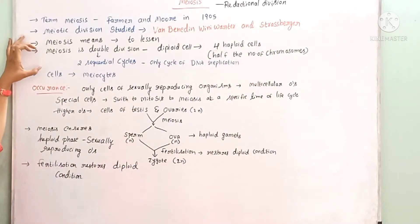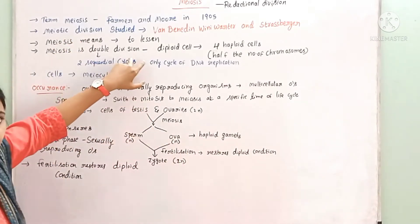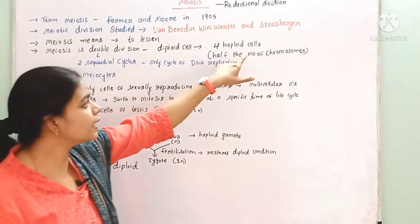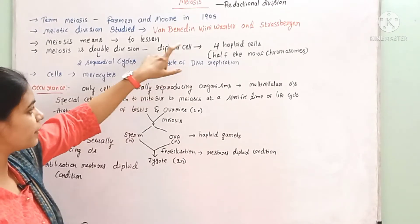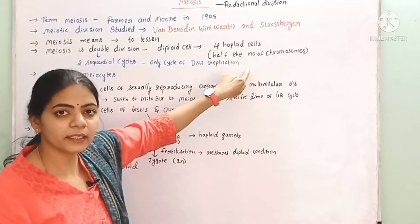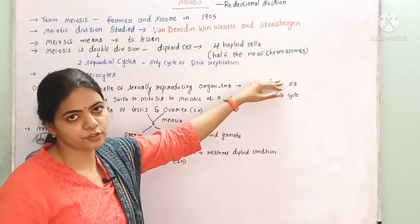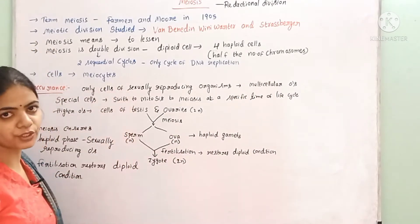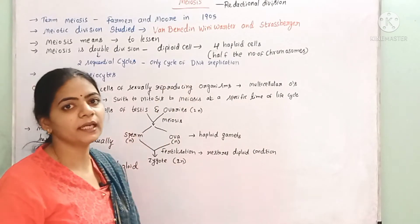Meiosis involves a double division — unlike mitosis which has only one division. Meiosis occurs in a diploid cell, and finally produces four haploid cells. The meiotic division starting from a diploid cell results in haploid cells. Meiosis has two sequential cycles; however, DNA replication occurs only once — in the first cycle, not in the second.